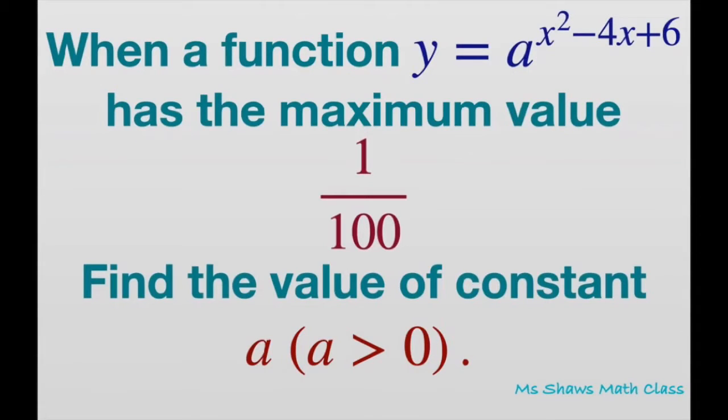Hi, everyone. When a function y equals a to the power of x squared minus 4x plus 6 has the maximum value of 1 divided by 100, we're going to find the value of our constant a.